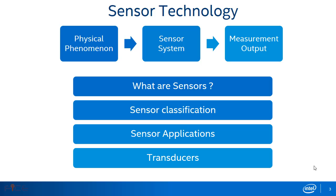A transducer is an electronic device that converts energy from one form to another. A transducer is basically more than a sensor — it consists of a sensor or actuator along with signal conditioning circuits.